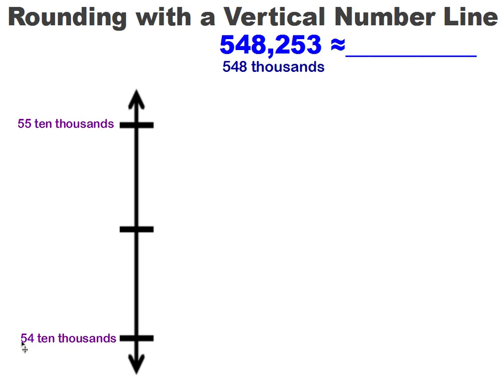I have 548 thousands. So I need to find where this would fall on this number line. So I might need to know how many thousands are in 54 ten thousands. It would be 540 thousands. If I was reading this number, 548,000, 540 thousands. Look for that relationship. So now I need to know how many thousands are in 55 ten thousands. It would be 550 thousands.